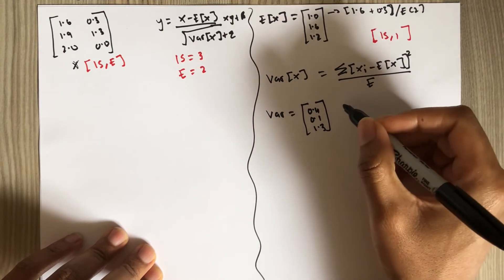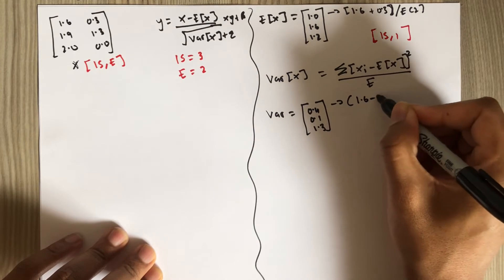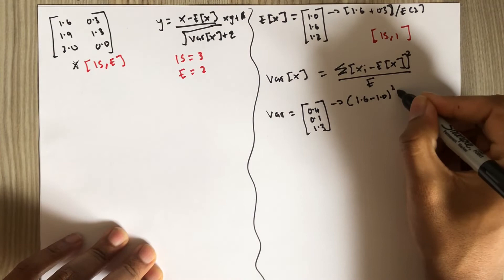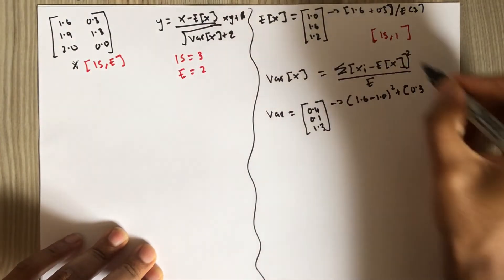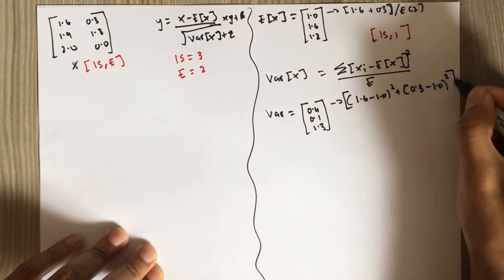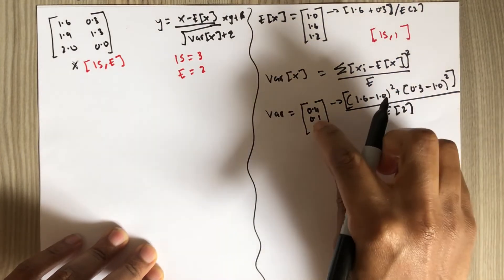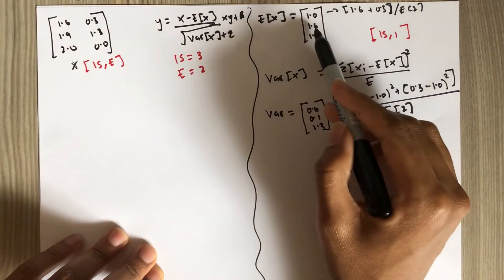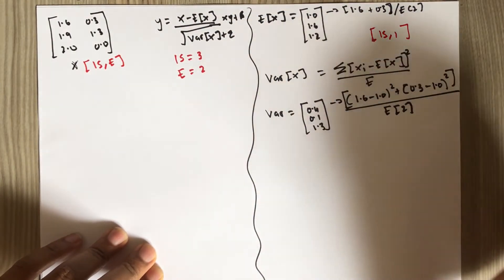How did I get 0.4, for example? Using the formula, you just say 1.6 minus 1.0, 1.6 minus the mean squared plus 0.3, this is 0.3 minus its mean, then squared, then you add them, then you divide by e, which is 2. Similarly, 0.1, you say 1.9 minus 1.6 squared plus 1.3 minus 1.6 squared, then you add them, then you divide by e. That's how you can get 0.1.